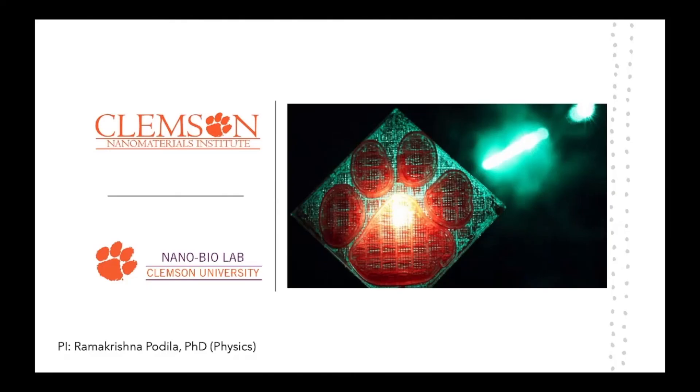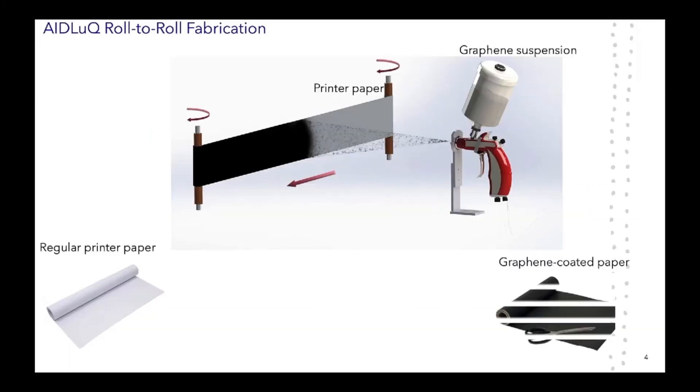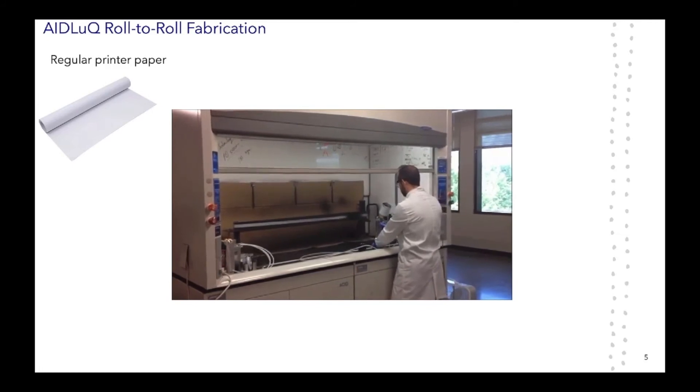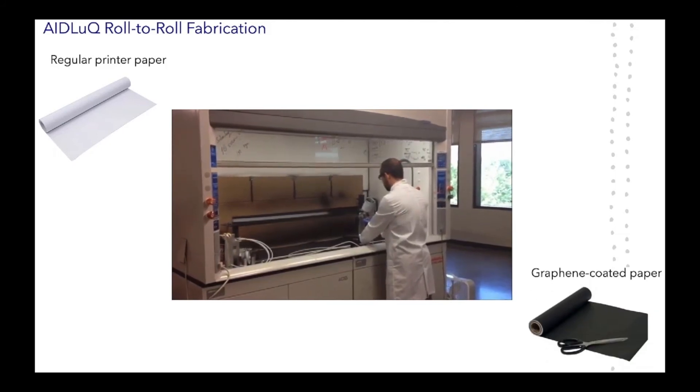Hey, I'm Ramakrishna Podila, and I'm going to talk to you about Analyte-Induced Disruption in Luminescence Quenching, or simply AIDLUCK, and how this can be used for detecting COVID antibodies easily using a smartphone. To perform AIDLUCK assay, we mainly need graphene coated paper. And we use a scalable roll-to-roll fabrication method by spray coating graphene onto regular printer paper to make graphene coated paper. As you can see here in the video, this spray coating process is quite simple, very effective, and very fast. After coating the paper, we get graphene coated paper.